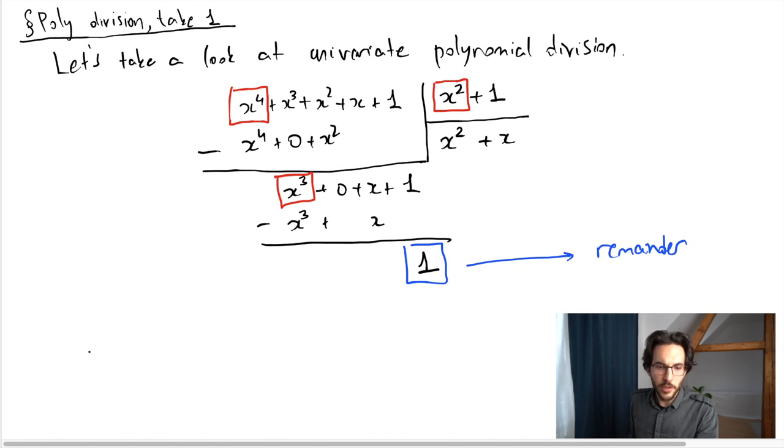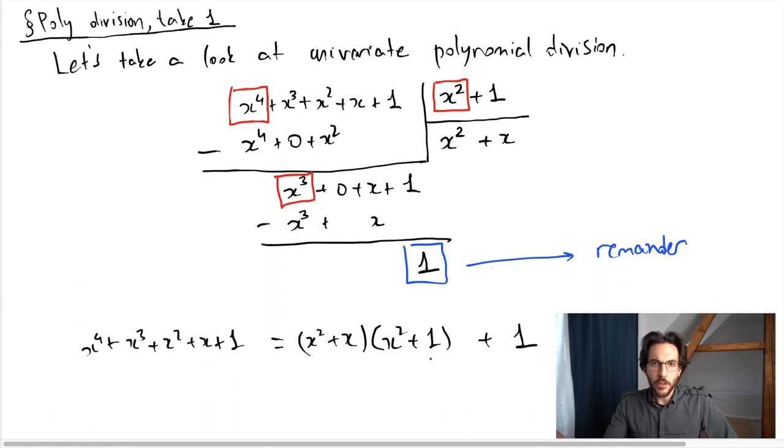So the upshot here is that x to the 4 plus all this is the quotient x squared plus x times the polynomial I was dividing by, plus the remainder. I went through this trivial calculation quite laboriously because pretty much the words that I've used I will use once again when doing multivariate polynomial division. But the important thing is that multivariate polynomial division will have an extra step here that did not really appear here.